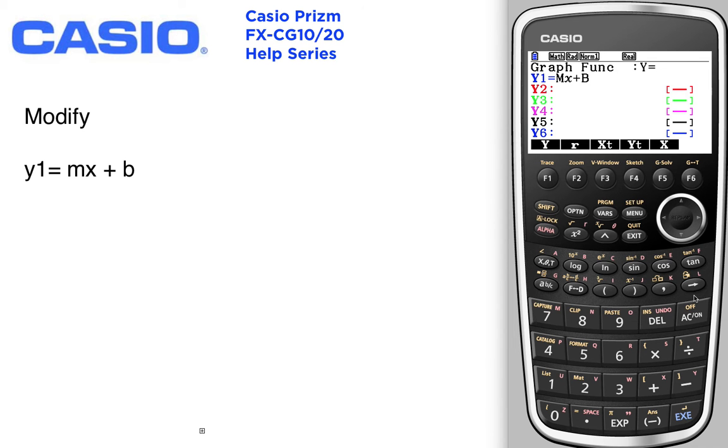The calculator is going to recognize these as modifiable variables when I press modify. If you press draw, the calculator will use m and b from the memory and draw a graph. We want to use modify.